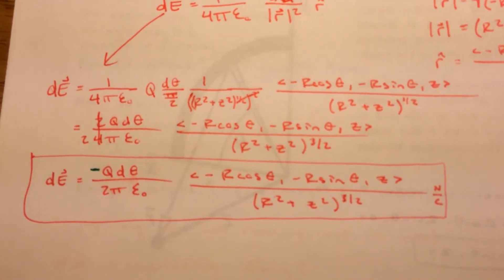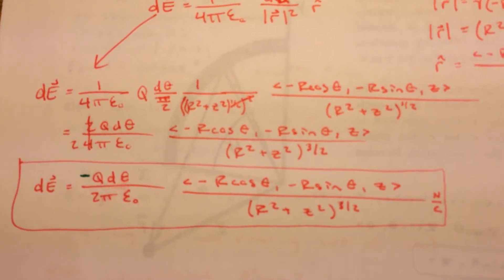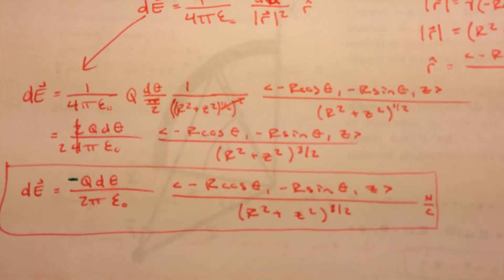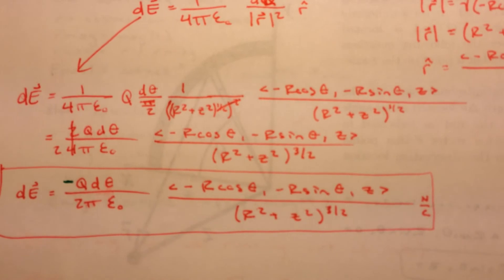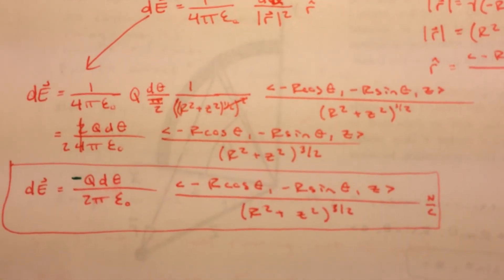Then we're just going to simplify that out. We're going to say dE is equal to negative q. Remember that. Always read the directions and the problem very carefully. Negative q d theta over 2 pi epsilon naught.